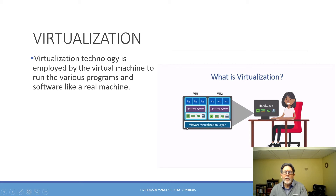The common usage of the term virtualization means we want to create a virtual machine. Here we have virtual machine one and virtual machine two on one hardware box, one PC. It's software that allows us to install virtualization and emulate one or more additional machines. We would have the base machine and two more virtual machines — three operating systems with multiple applications on each machine.